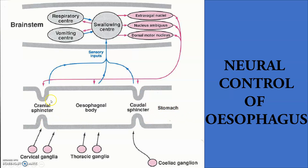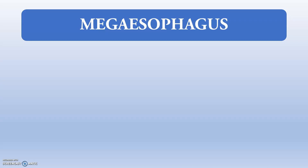The cranial sphincter is controlled by the cervical ganglion, the esophageal body by the thoracic ganglion, and the caudal sphincter by the celiac ganglion. The respiratory center, the salivation center, and the vomiting center all receive sensory inputs that connect to all three sphincters and the esophageal body. Whenever there is a problem with the swallowing center, it can affect the esophagus, and problems with the stomach or caudal sphincter can relay information to the swallowing center, leading to anorexia.